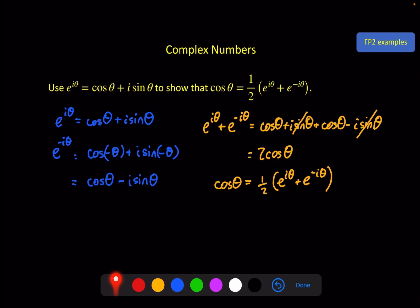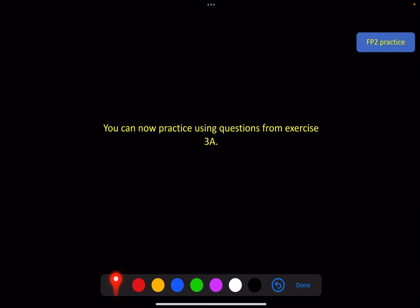We'll do a lot on trigonometric identities as we get to de Moivre's theorem, but for now that should be enough for you to have a go at some of the questions in exercise 3a, and maybe I'll see you for dividing and multiplying in the next video.